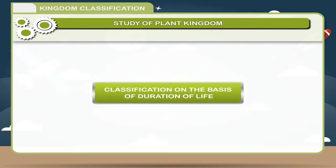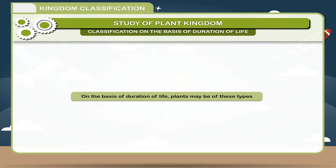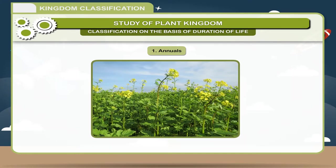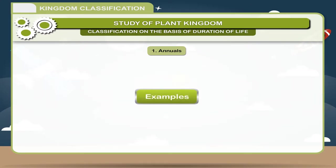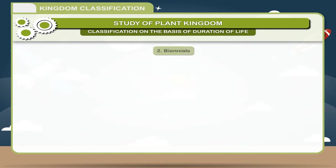Classification on the basis of duration of life: plants may be of these types. 1. Annuals — plants live for one year or one season and complete their life cycle in the same season. Examples include Mustard, Paddy, and Wheat.